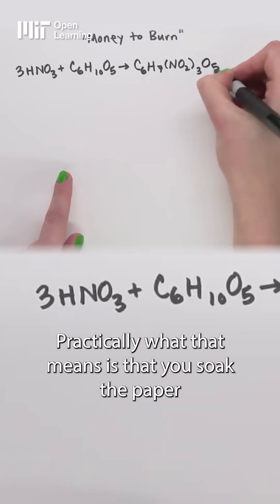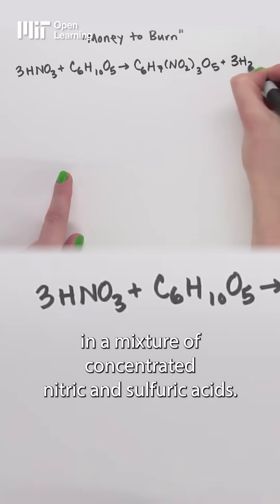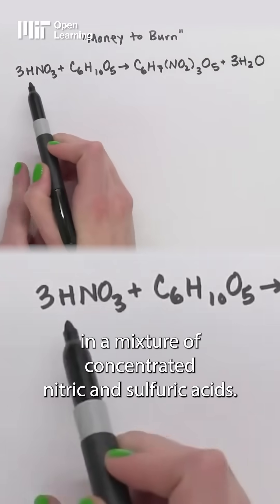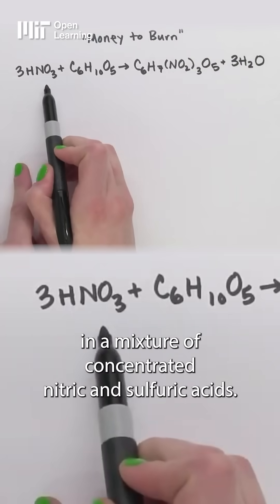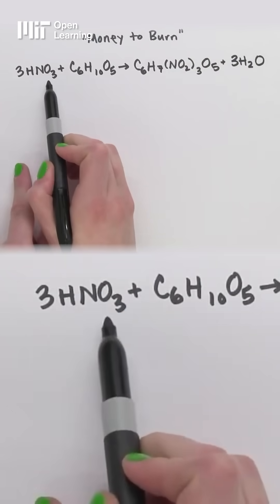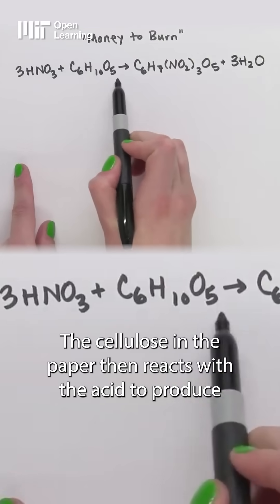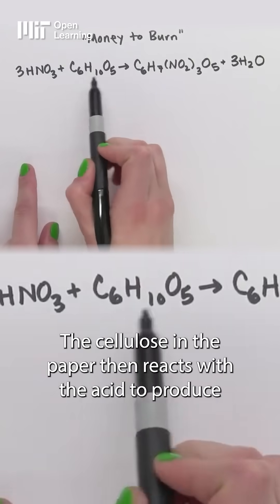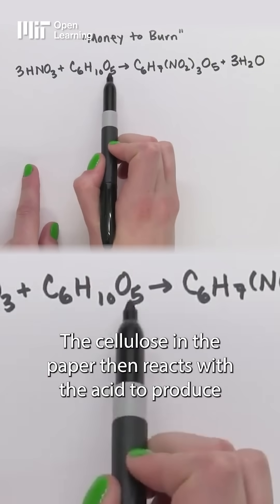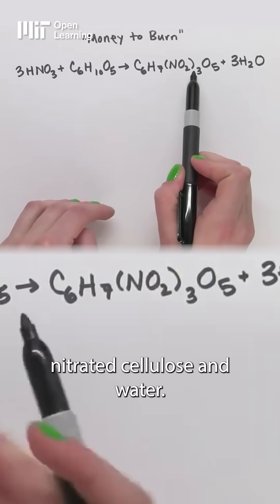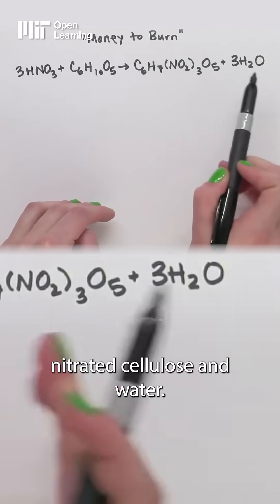Practically, what that means is that you soak the paper in a mixture of concentrated nitric and sulfuric acids. The cellulose in the paper then reacts with the acid to produce nitrated cellulose and water.